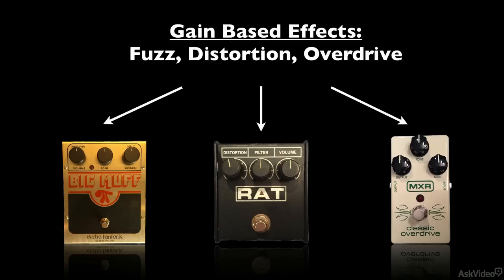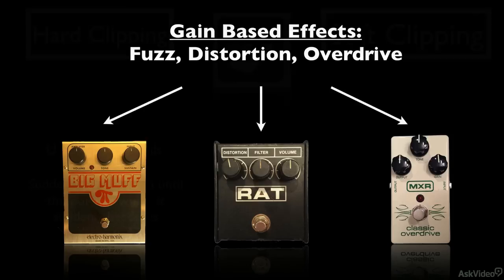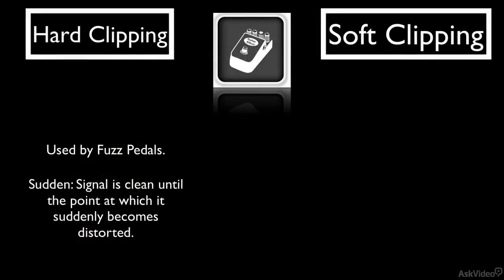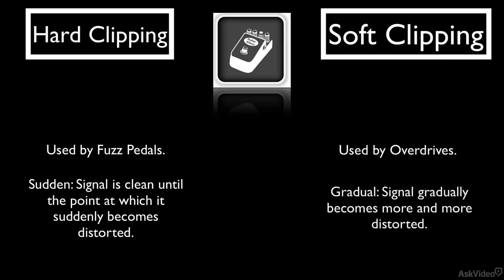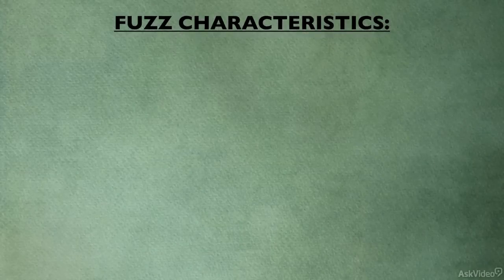Fuzz pedals are a favorite type of distortion pedal because they can give so much personality to the guitar sound. In the larger distortion category, the fuzz pedal is the one that can alter the sound in the most extreme way, due to the hard clipping that it produces. Unlike the soft clipping of the overdrive, hard clipping comes on suddenly as the signal hits its limit and the signal peaks get chopped flat. Probably the best way to describe the sound of fuzz pedals is simply to use the word fuzzy — they sound fuzzy.